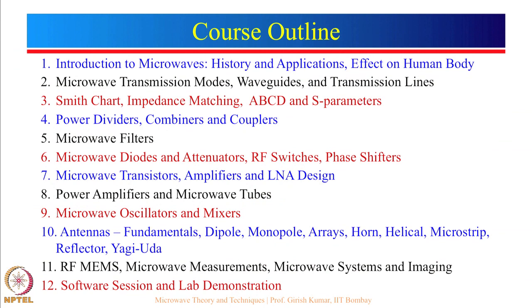After this, it will be followed by power amplifiers — we will cover solid state power amplifiers and microwave tubes such as klystron, magnetron and so on. Then we will discuss microwave oscillators and mixers, followed by different types of antennas: dipole, monopole, arrays, horn, helical, microstrip, reflector, Yagi-Uda. In this course we will talk a little about antennas; through NPTEL I have recorded 30 hours of lectures on antennas which you can also see to enhance your knowledge.